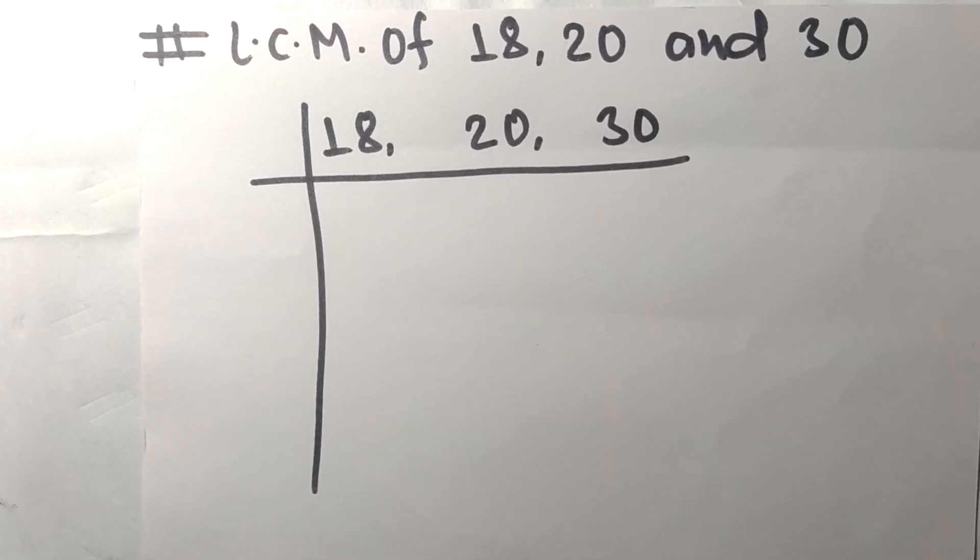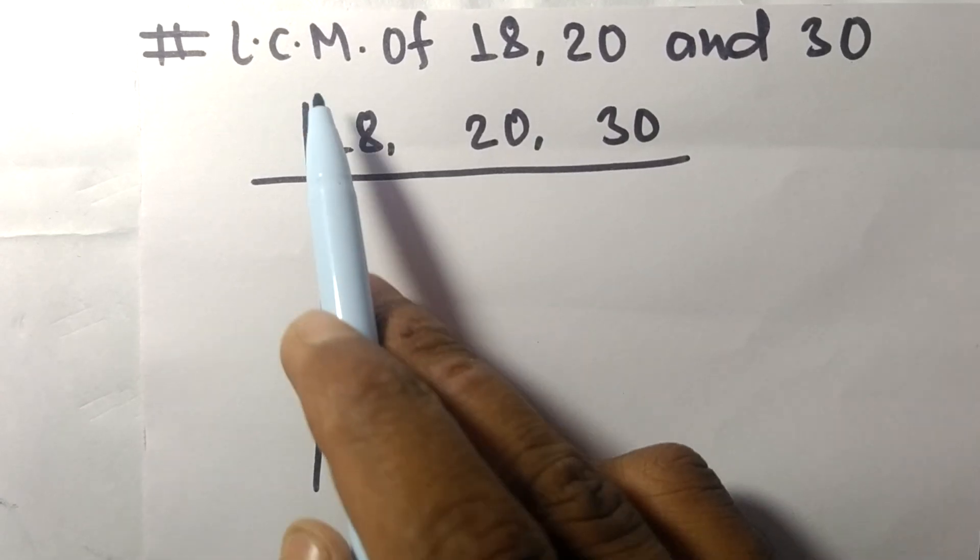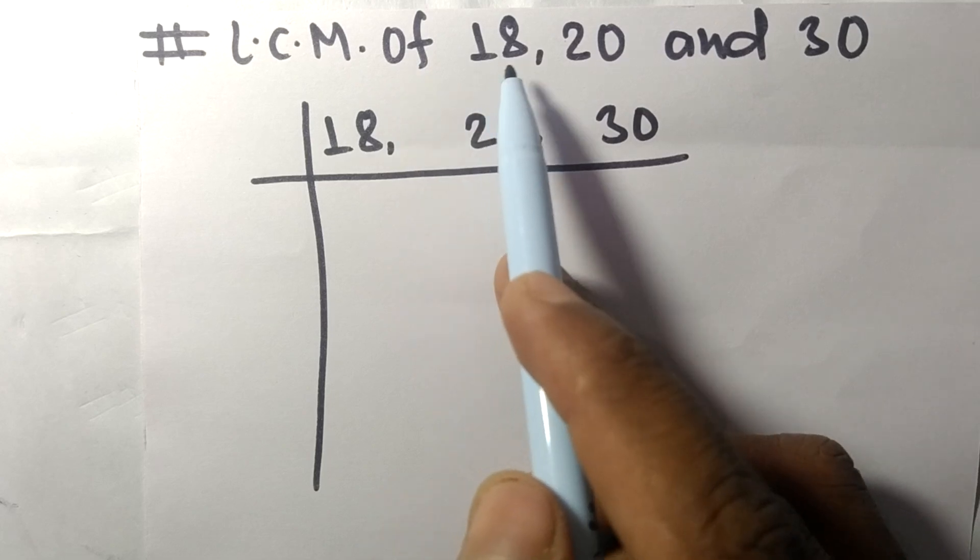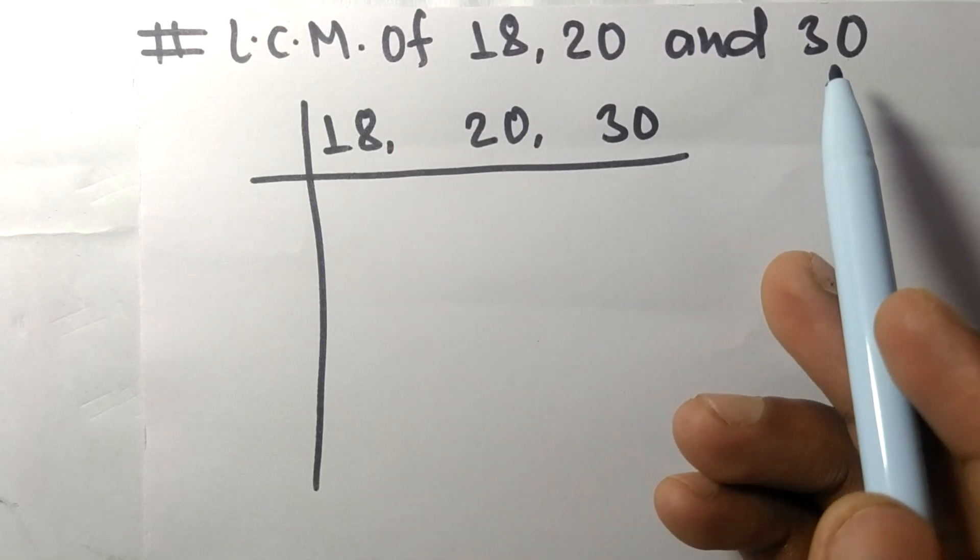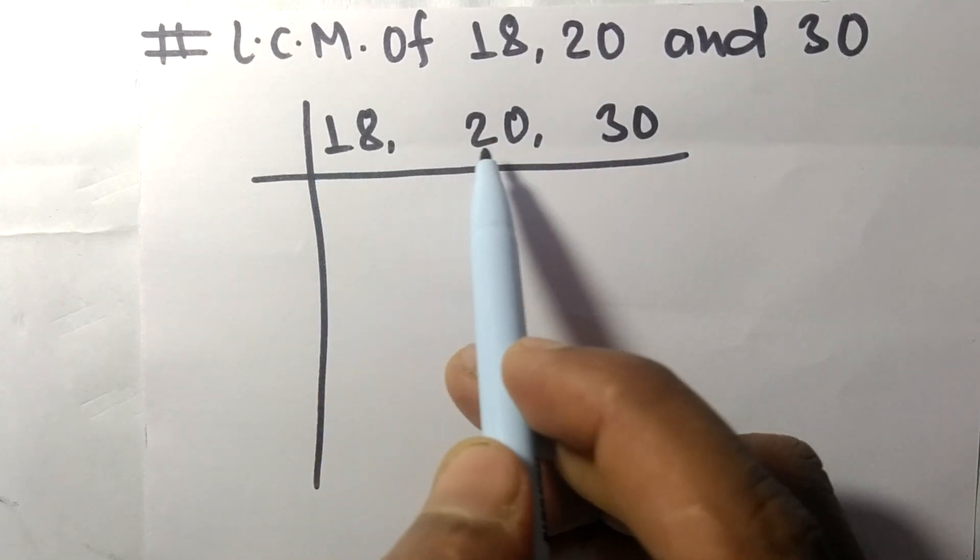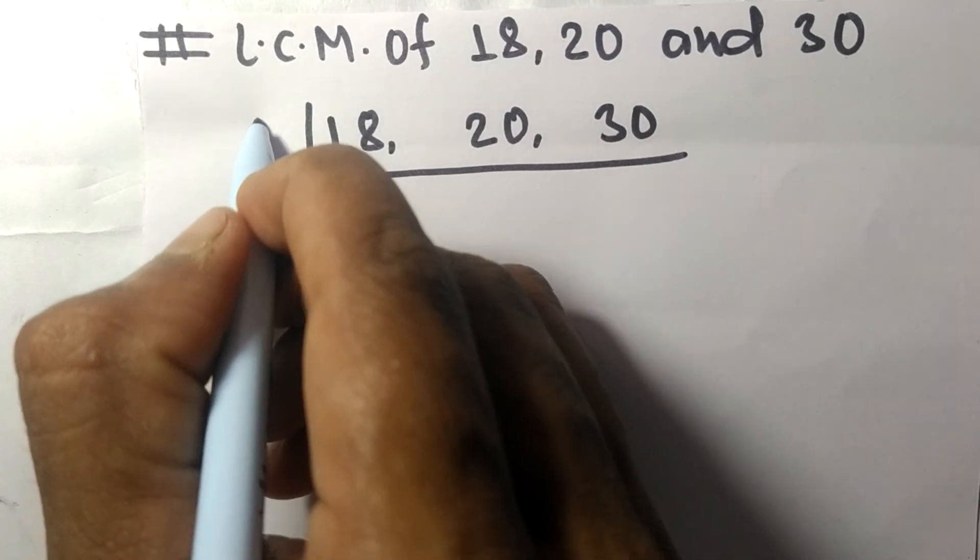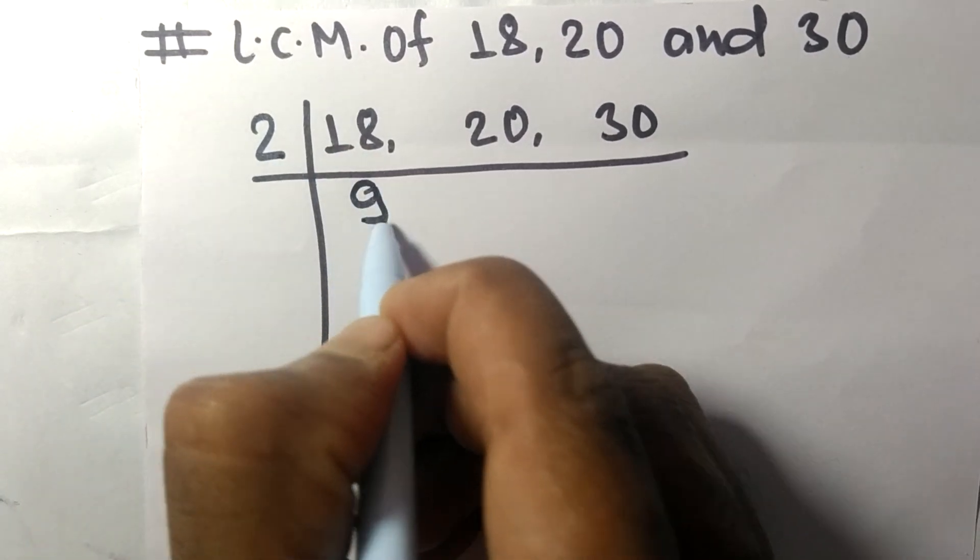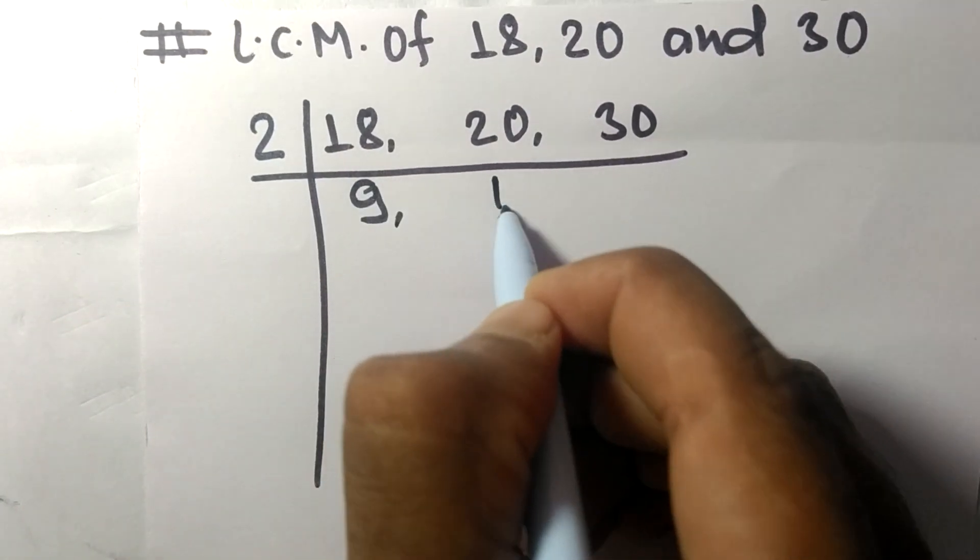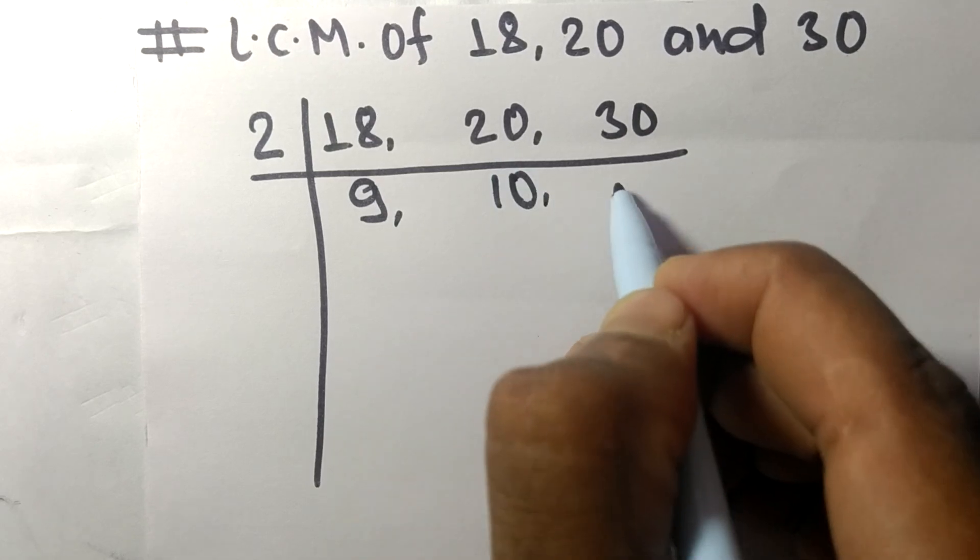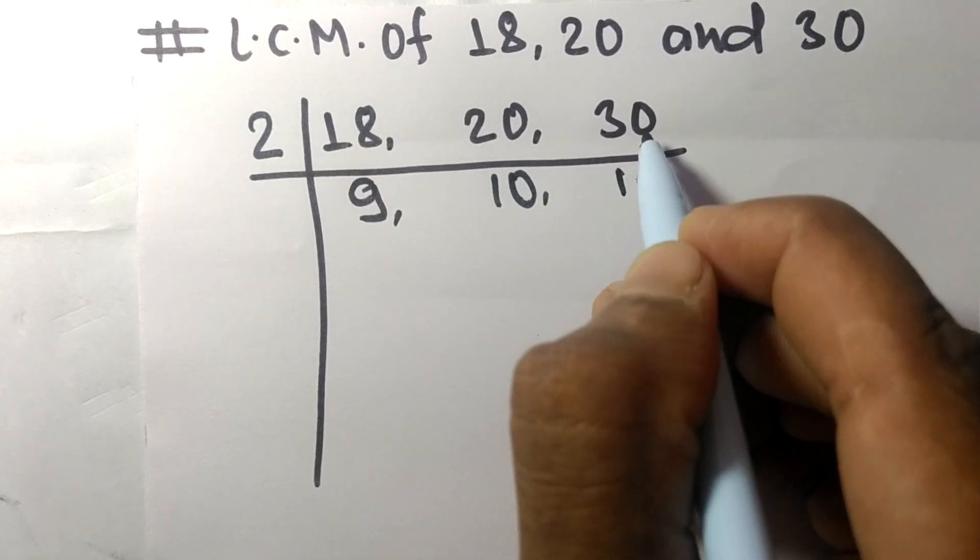So today in this video we shall learn to find the LCM of 18, 20, and 30. These numbers are divisible by 2. 2 times 9 means 18, 2 times 10 means 20, 2 times 15 means 30.